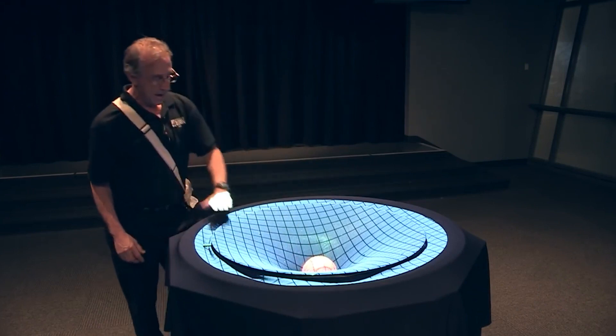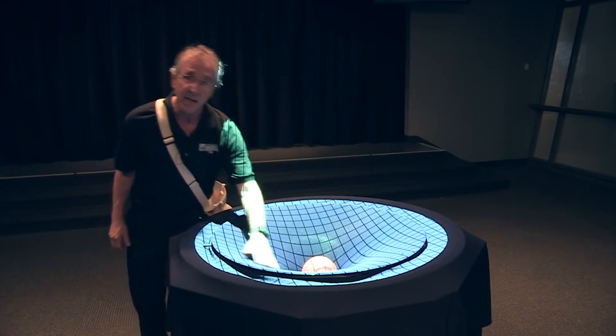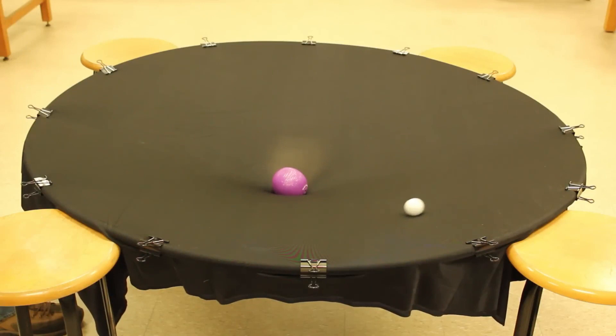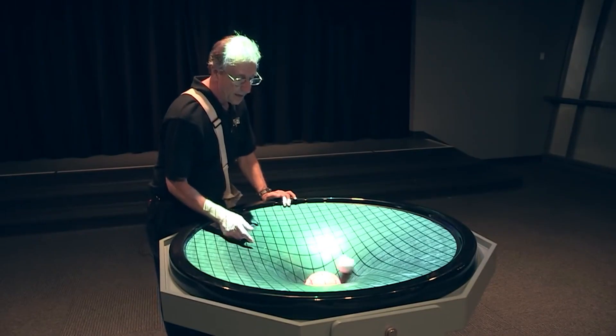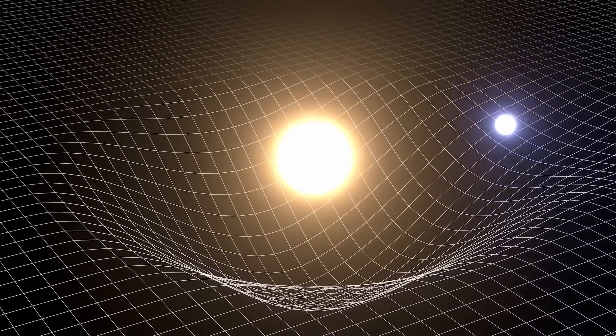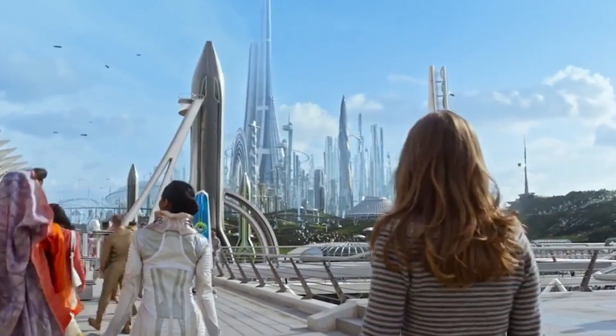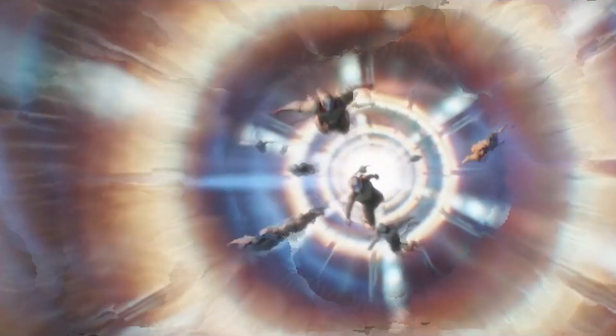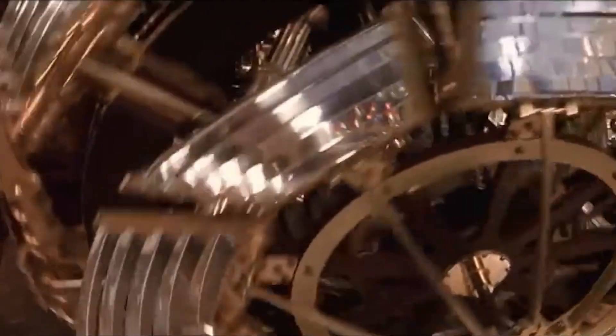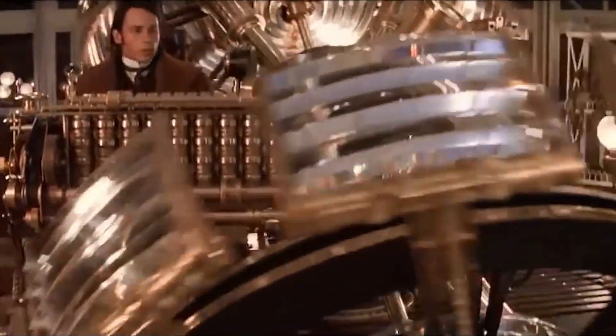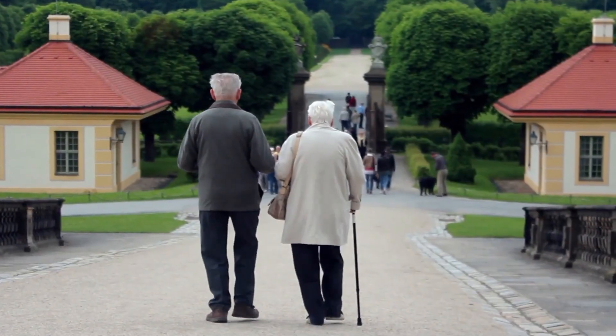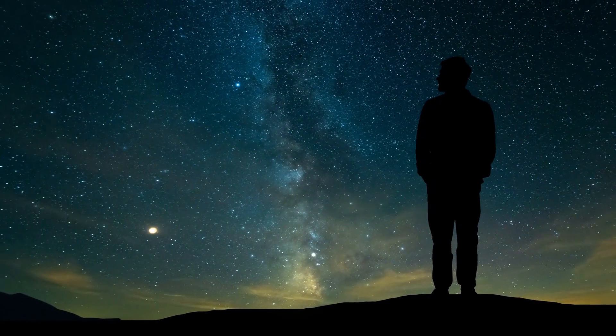To visualize, imagine space-time as a trampoline. Place a bowling ball representing a planet on it and the fabric sags. Roll a marble, a spaceship, near the bowling ball and it doesn't roll straight but curves towards the ball. This curvature represents gravity and illustrates how celestial bodies create paths in space-time. Yet while future travel seems plausible, past travel presents a conundrum known as the grandfather paradox. This theory posits that going back in time and altering events, like preventing your grandparents from meeting, would result in your non-existence and thus the impossibility of your time traveling intervention.